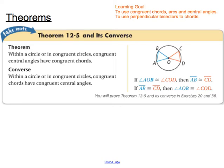This brings us to our second theorem, which in many ways is very similar to the first. It states that within a circle, or in congruent circles, congruent central angles cut off congruent chords. And the converse of this is also true: if we have congruent chords, then their central angles must be the same.